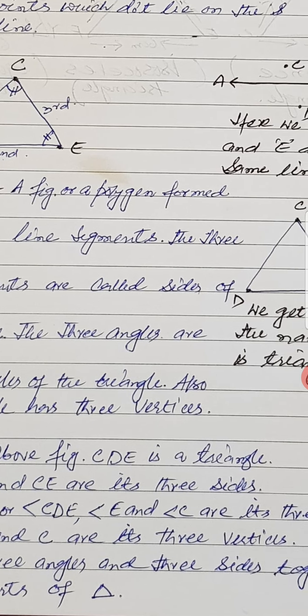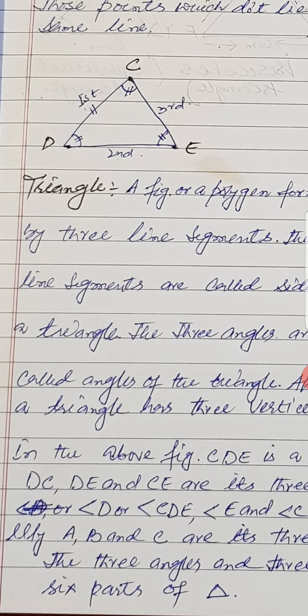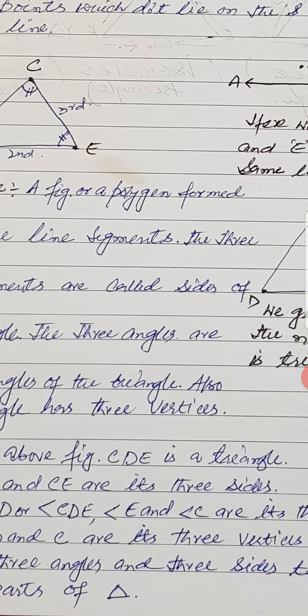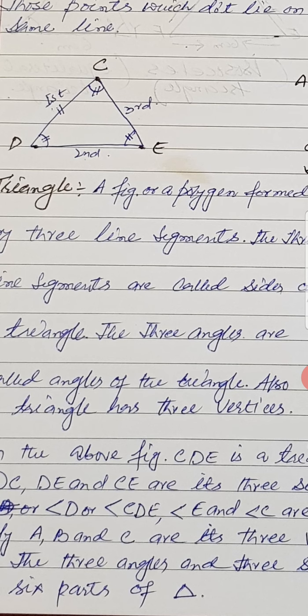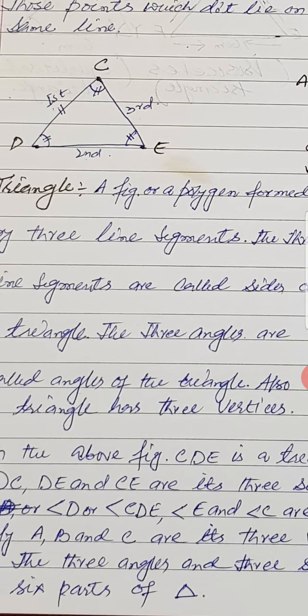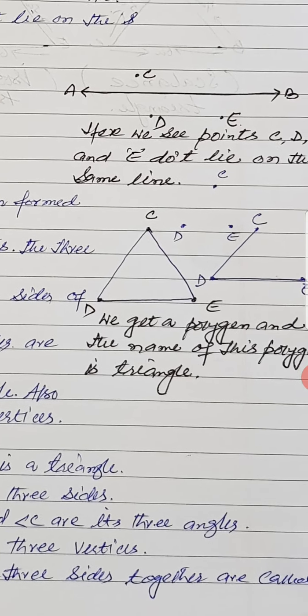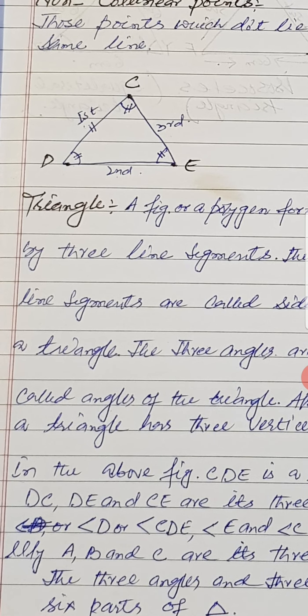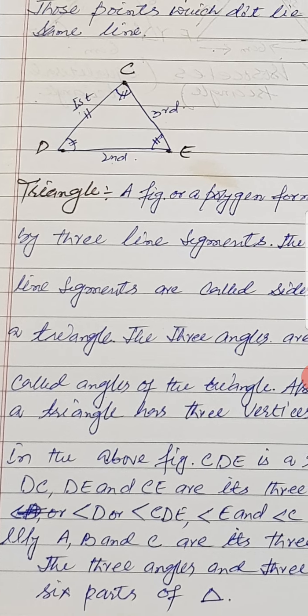In the above figure, CD, DE and CE are called the three sides of the triangle. Angle D's full name is CDE; angle E and angle C are the three angles of triangle CDE. Angle C, angle D and angle E are the three angles.